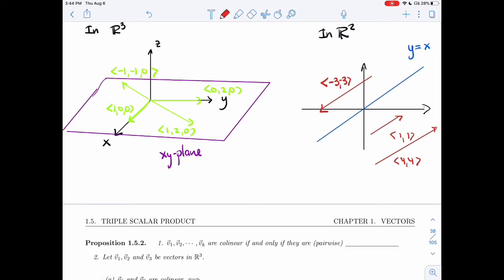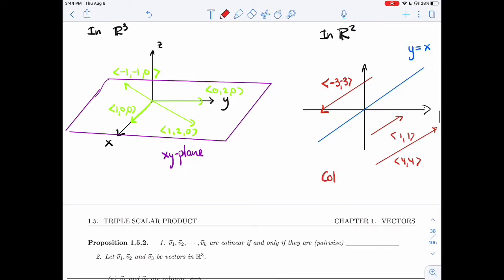So all of these vectors are parallel to Y equals X. And if I wanted, if I started all of them at the origin or at any point on that blue line, they would actually be contained in it. So all of these are collinear.